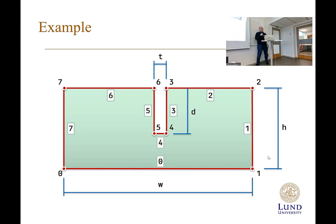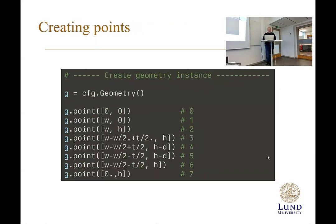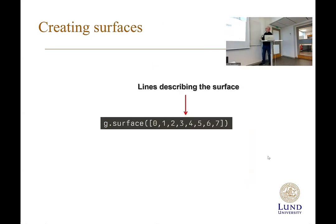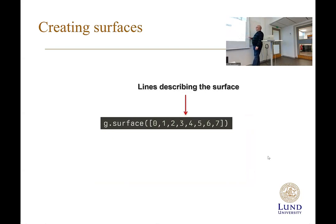Finally, we create our surface using g.surface and add all of the lines we defined. That will create the surface that we will use for meshing. Now we have a complete geometry description.